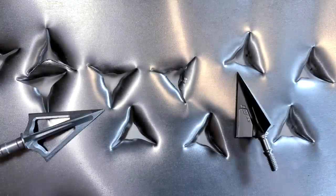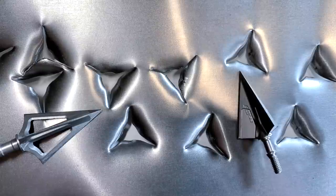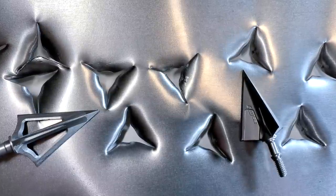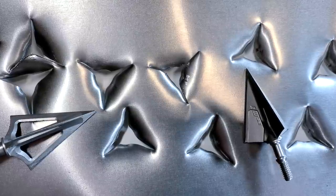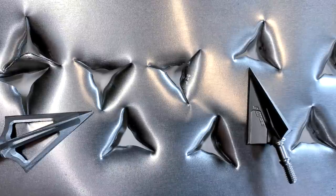Here you can see the wound channel of both of these heads, the Montec there on the left and the M3 on the right. And you can see they're not super impressive holes. They have pretty small cutting diameters. And you can see the M3 is just slightly smaller than the Montec.